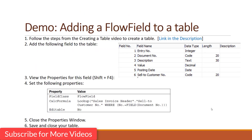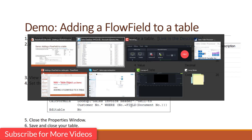This demo will show you how to add a flow field to your table. First, I will create a table with six fields, then view the property of field number six, 'Sell-to Customer Number'. In the properties page I will set the field class as a flow field and use the calc formula as a lookup type that will look up the Sales Invoice Header table based on document number. When you fill the document number, this will automatically populate the Sell-to Customer Number.